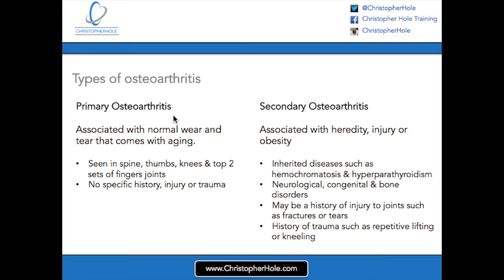Primary osteoarthritis is slightly easy to describe. It's associated with normal wear and tear that comes with aging. It's seen at the spine, thumbs, knees, and the top two finger joints, and there's no specific history, injury, or trauma to the specified joint — be it spine, thumb, knee, or finger joints.